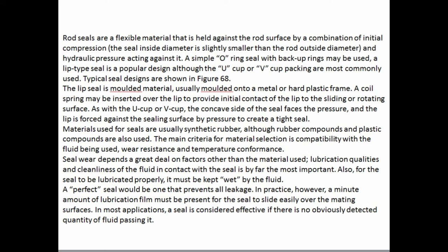A coil spring may be inserted over the lip to provide initial contact of the lip to the sliding or rotating surface. As with the U-cup or V-cup, the concave side of the seal faces the pressure and the lip is forced against the sealing surface by pressure to create a tight seal. Materials used for seals are usually synthetic rubber, although rubber compounds and plastic compounds are also used. The main criteria for material selection are compatibility with the fluid being used, wear resistance, and temperature conformance. Seal wear depends greatly on lubrication qualities and cleanliness of the fluid — the seal must be kept wet by the fluid. The perfect seal would prevent all leakage, but in practice a minute amount of lubrication film must be present for the seal to slide easily over mating surfaces. A seal is considered effective if there is no obviously detectable quantity of fluid passing.